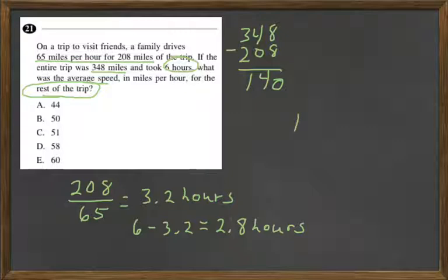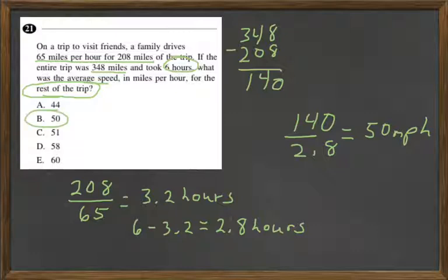So let's take the 140 miles, divide it by the time, the 2.8 hours, and you plug that in the calculator, and you will get 50 miles per hour. The answer is B.